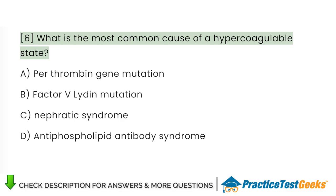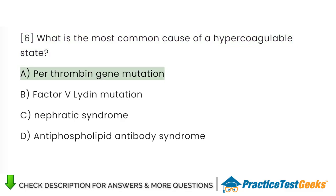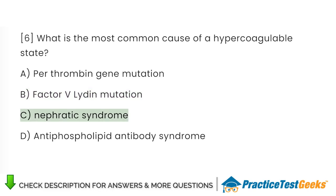What is the most common cause of a hypercoagulable state? A. Prothrombin gene mutation. B. Factor V Leiden mutation. C. Nephrotic syndrome. D. Antiphospholipid antibody syndrome.